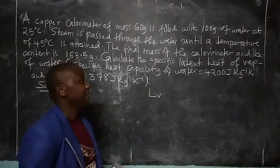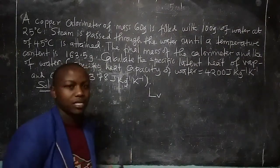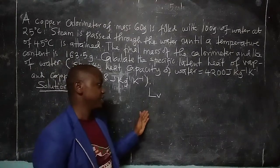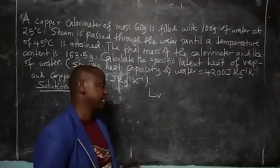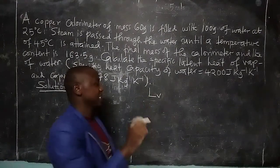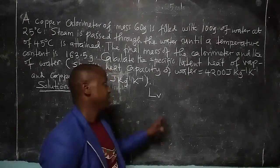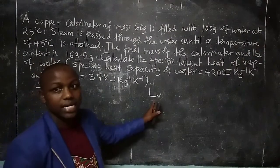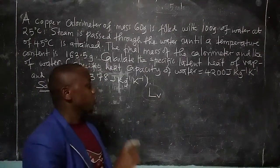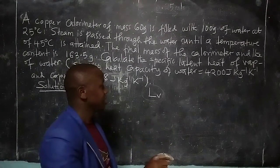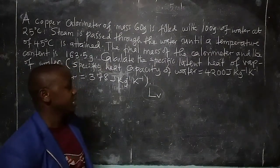A certain liquid will require an amount of heat so that it may convert from being liquid to a gas — that is a change of state which happens at a constant temperature. Latent heat of vaporization is the amount of heat absorbed by a liquid so that it may change from liquid to vapor or gas. The same amount of heat is also given out by the gas when converting back to liquid.